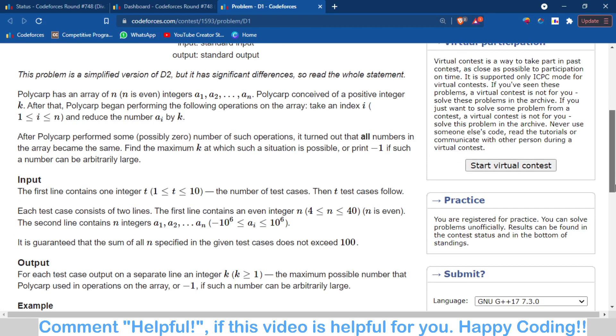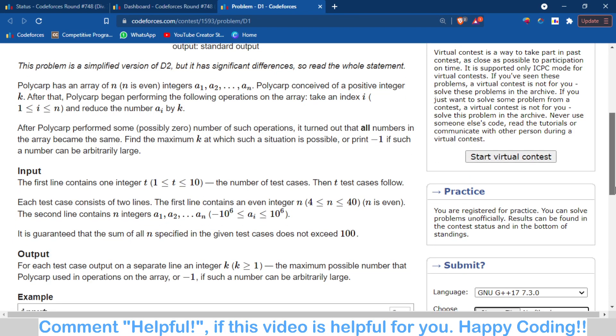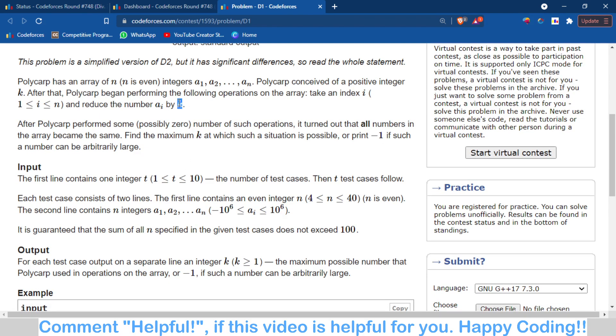In this problem, there is an array of n integers given to us and we have to find the maximum possible integer k such that if we perform a particular operation. The operation is that we can take an index at one time and then we can reduce the element of that index by k.